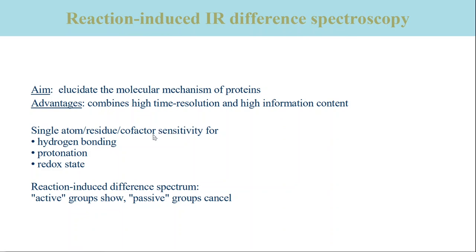An example of this are changes in hydrogen bonding. Other molecular events that can be recorded are the protonation of single residues or changes in the redox state of cofactors. Usually a protein reaction of interest is initiated directly in the infrared cuvette and spectra before, during and after the reaction are recorded. From these spectra, difference spectra are calculated that reflect only the changes of infrared absorbance. Active groups will show up, while passive groups cancel in the subtraction.